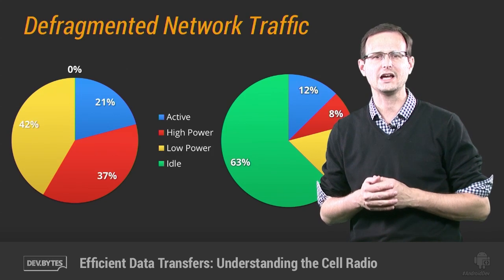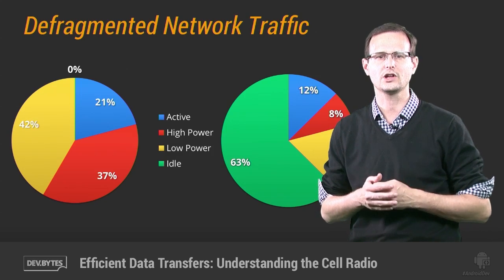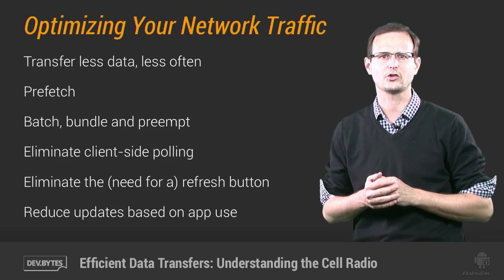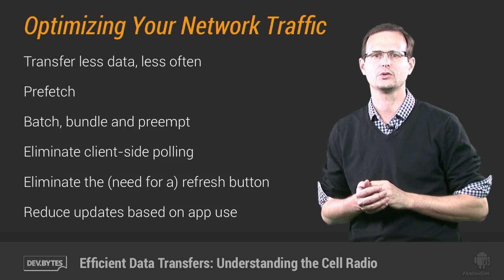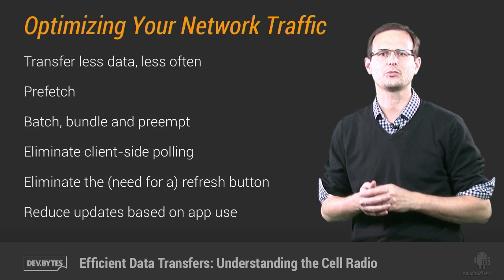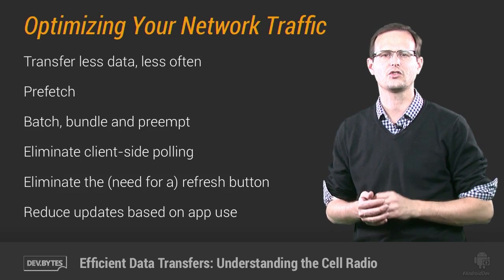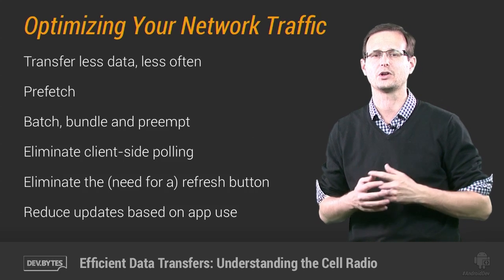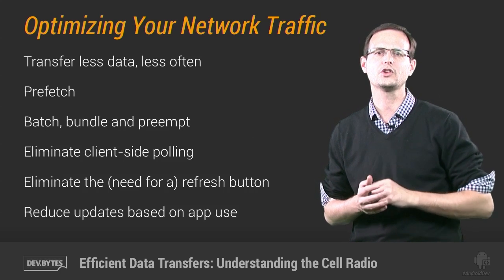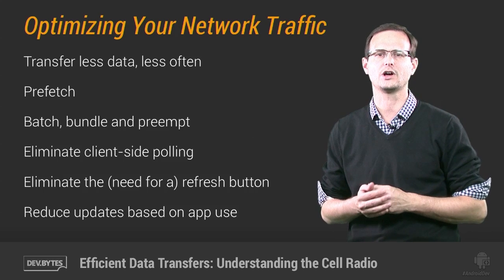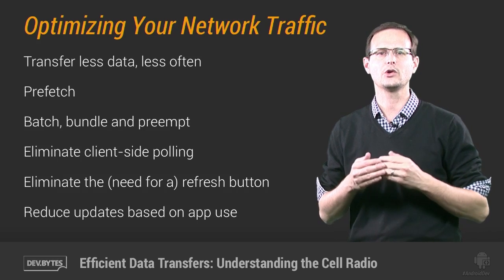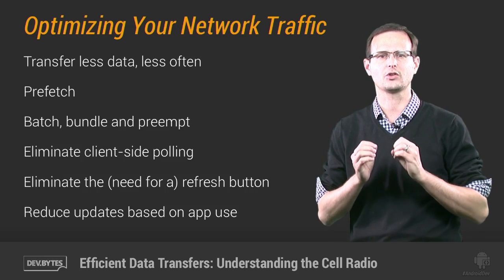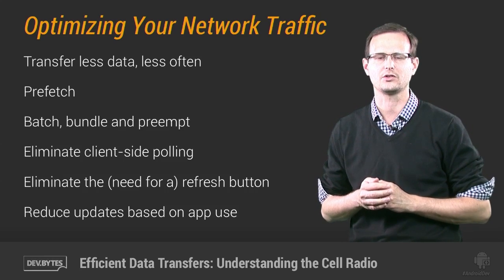So taking the cell radio into account, you can minimize the battery impact associated with your app's data transfers by transferring as little data as possible, as infrequently as possible. Defragment your network access by prefetching, batching, and bundling your transfers, and eliminate client-initiated updates and polling as much as possible. The most important thing to remember is that every time you transfer data, no matter how small, the radio is powered up for nearly half a minute. So every decision you make should be based on minimizing the number of times that this happens.